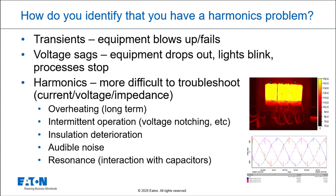If I have insulation deterioration, consider this: if you had a transformer and you were trying to identify whether it had a harmonics issue or a transient issue, look at the insulation. If it looked like it was baked in the oven for a year, that's probably a harmonics issue. If you have a single pinpoint failure on pretty new-looking varnish, that's probably a transient problem.